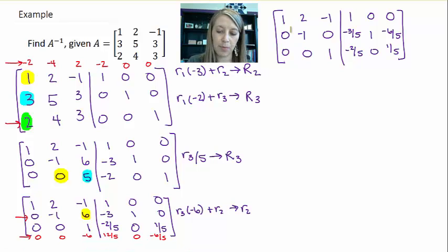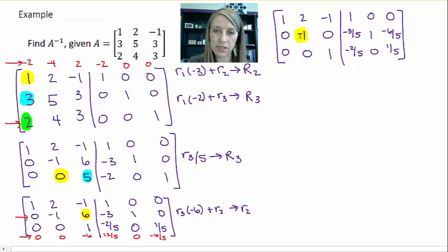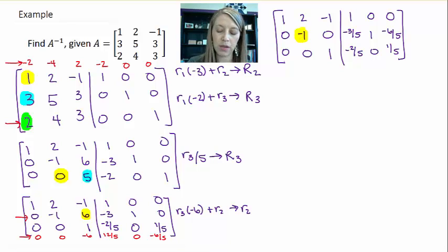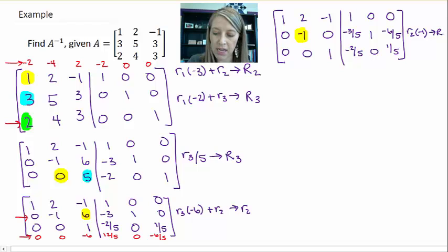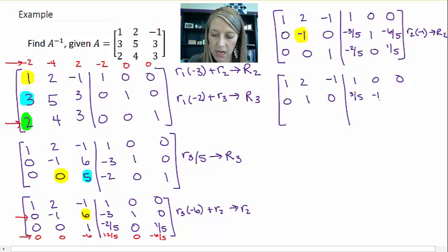And the last step in this row is to change this negative 1 into a positive 1. And so I do that by either multiplying or dividing by a negative 1. And so basically I'm just going to change all the signs in my second row. So it gives me positive 3 fifths, negative 1, and positive 6 fifths.